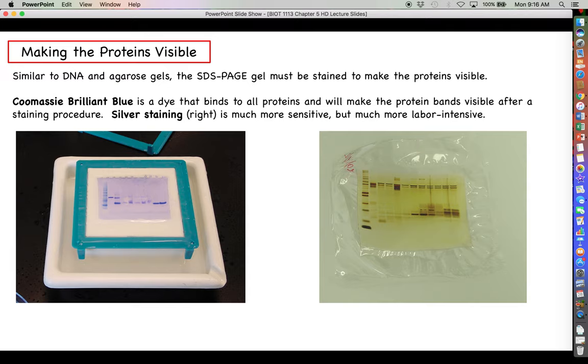On the right, you see an alternative method, which is much more sensitive, but a lot more of a pain in the rear to do, and that's called silver staining. You'll notice the silver staining is showing much clearer, much crisper, and much more sensitive types of bands. But that's only the type of labor-intensive process you would want to put yourself through if you know you're dealing with a protein that is not in very high concentration. You want the more sensitive technique in those cases.